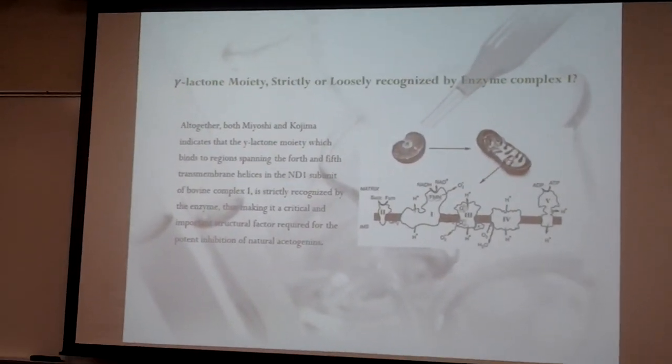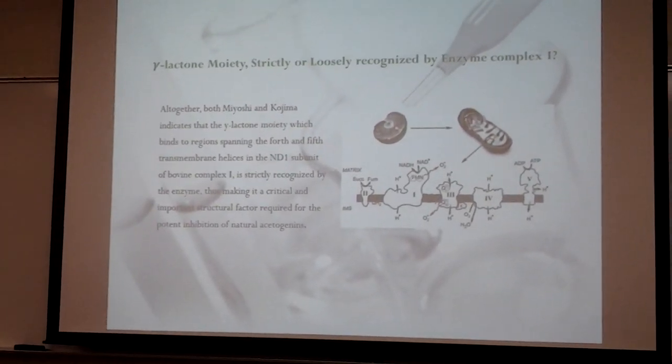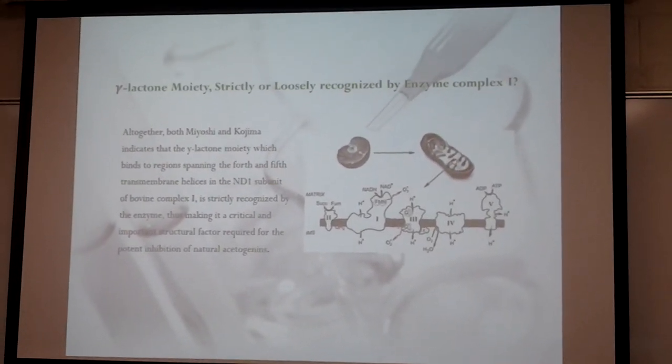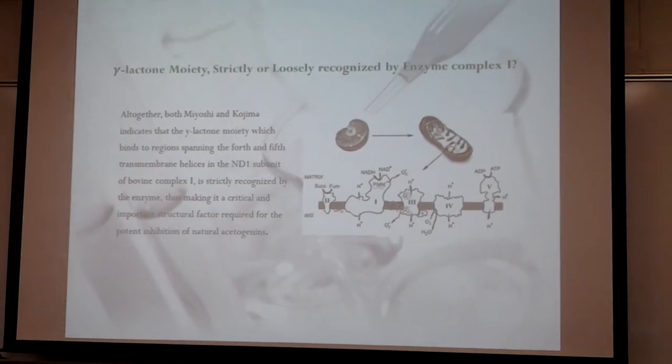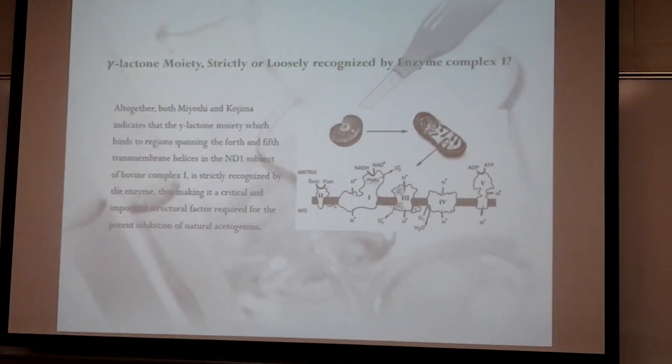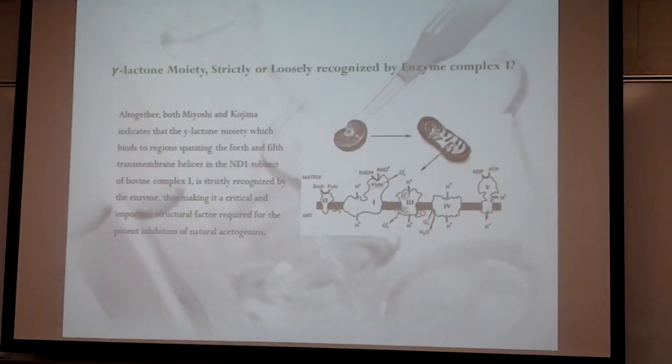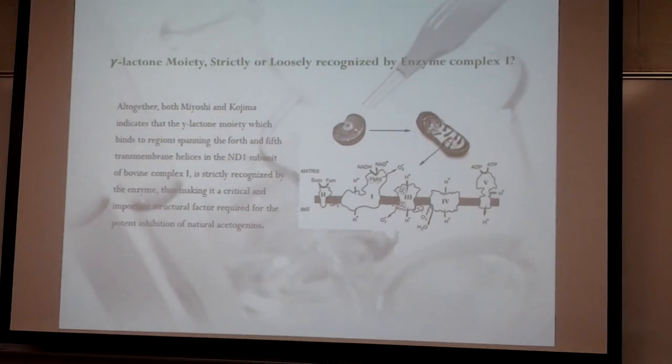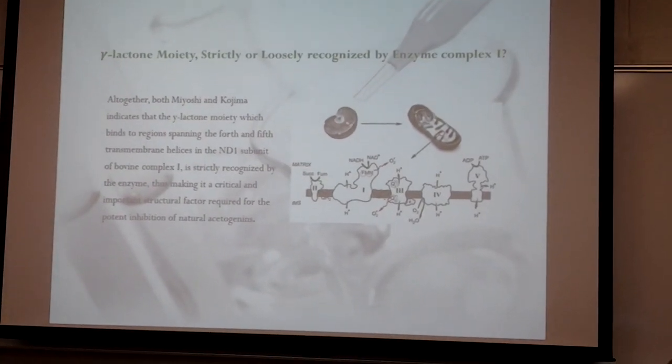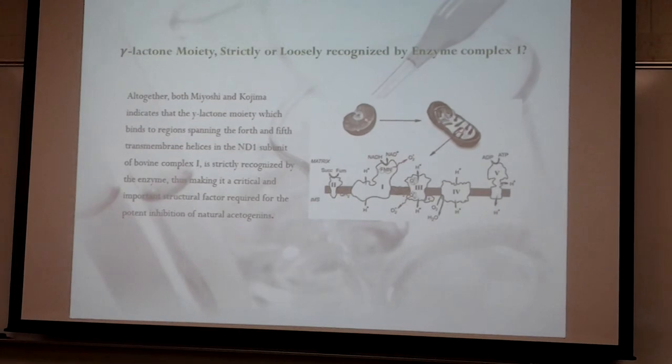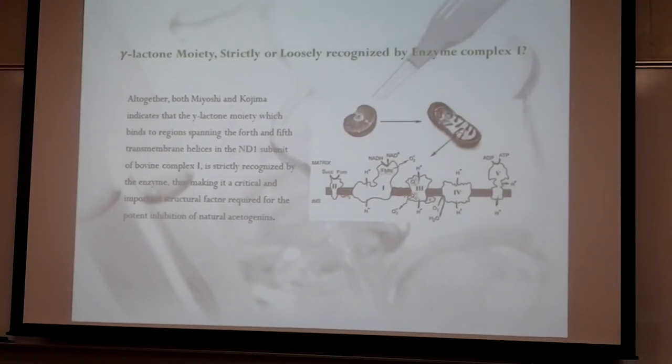Altogether, both Miyoshi and Kojima came to an agreement. It indicates that the gamma-lactone moiety, which binds to the region of complex I, is strictly recognized by the enzyme, thus making it a critical and important structural factor in the inhibition of natural acetogenins.